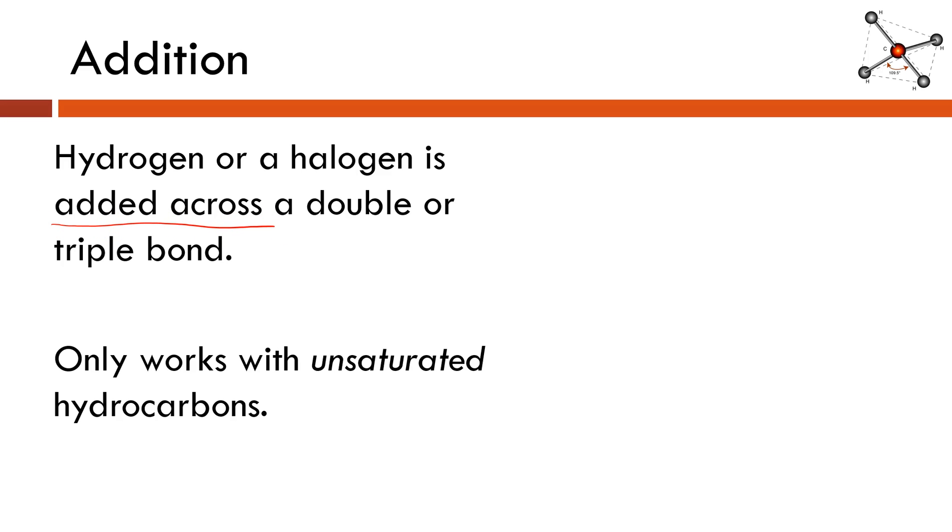The key with addition, you of course want to look for hydrogens or halogens being reacted with a molecule, but the hydrocarbons that we're going to look at must be unsaturated. We have to have a double or triple bond present in order for addition to occur. If it is a saturated hydrocarbon, like an alkane, addition reactions will not occur.